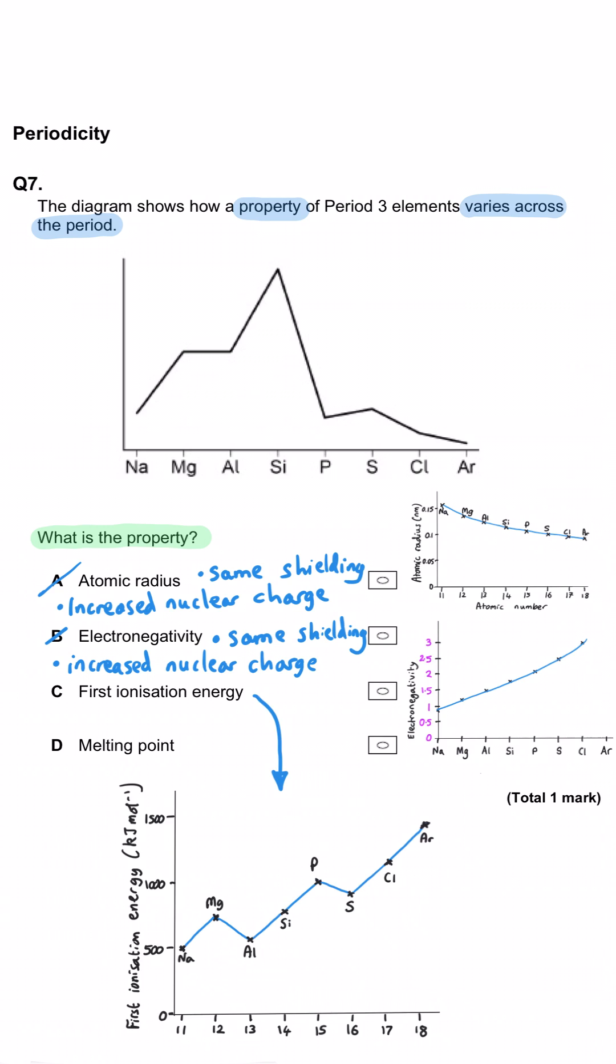First ionisation energy? No, that's quite a complicated pattern. It's a general increase across the period, but we get a dip between the second and the third, and between the fifth and the sixth, so it's not that one either.